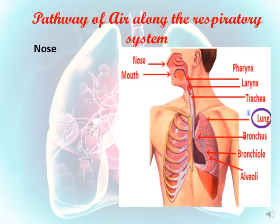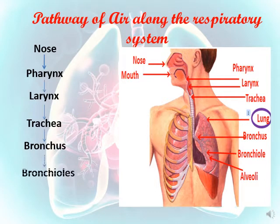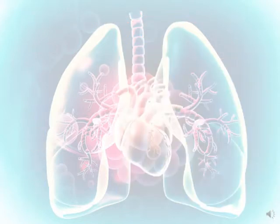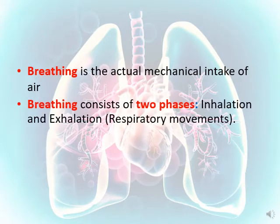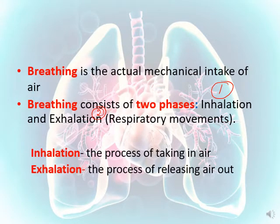The pathway along the respiratory system includes the nose, pharynx, larynx, trachea, bronchus, bronchioles, and the alveoli. Breathing is the actual mechanical intake of air. Breathing consists of two different phases: number one is called inhalation and number two is called exhalation, and they represent what's known as the respiratory movements. Inhalation is the process of taking air inside the body, while exhalation is releasing air outside the body.